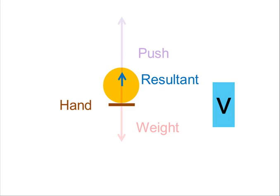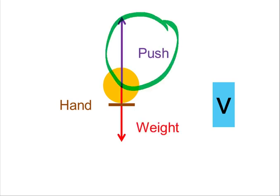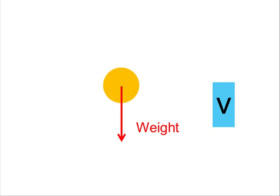Let's say this is the position of the ball and the hand the moment just before the ball leaves the hand. Remember that the resultant force represents the combined effect of the push and the weight. Now, the moment that the ball leaves the hand, the push stops. It's only the weight vertically that's acting on this ball — in other words, the ball is now in free fall.